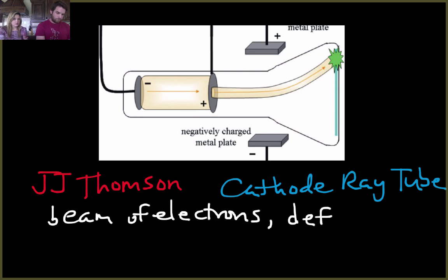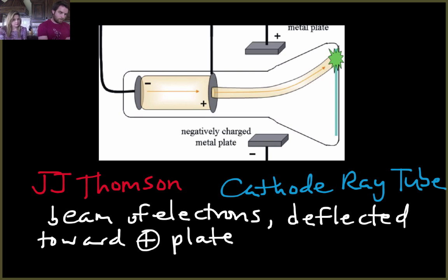On one side there was a positive plate and the other side there was a negative plate. The electrons were deflected towards the positive. We know that opposites attract. So if they were deflected towards the positive, it means that electrons would be negative. Therefore, electrons must be negatively charged.